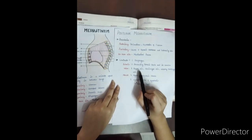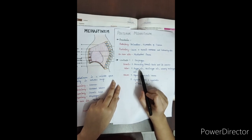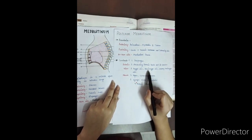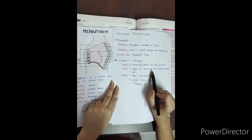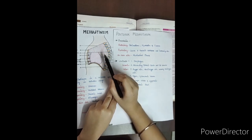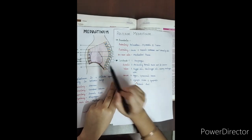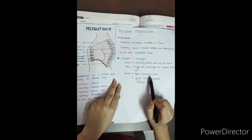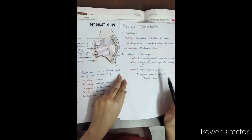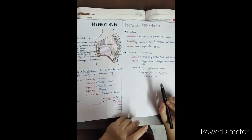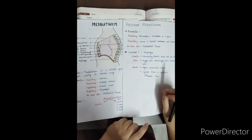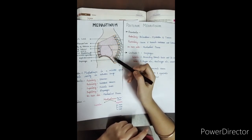For the veins of the posterior mediastinum, these are easy to learn: first, the azygous vein; then the hemiazygous vein; and also the accessory hemiazygous vein. For nerves, there is the vagus nerve, plus the splanchnic nerve. Lymph nodes are present. The proper lymphatic system and the thoracic duct — which is the largest lymphatic vessel of your body — are also present in the posterior mediastinum.